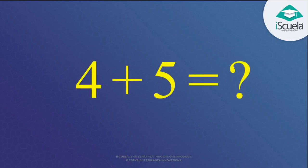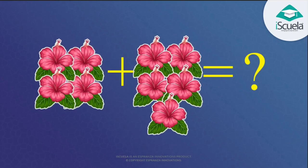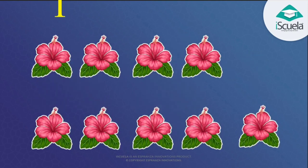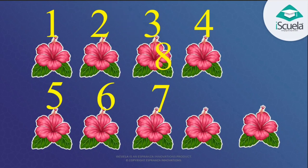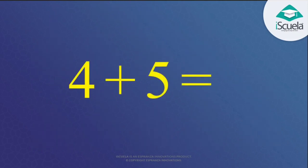Now look at the last question: 4 plus 5 is equal to what? 4 plus 5 — count: 1, 2, 3, 4, 5, 6, 7, 8, 9. So 4 plus 5 is equal to 9.